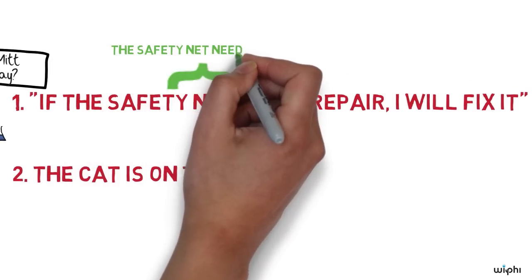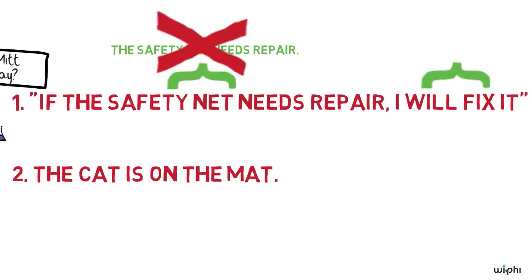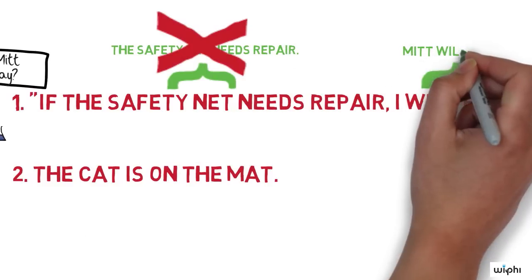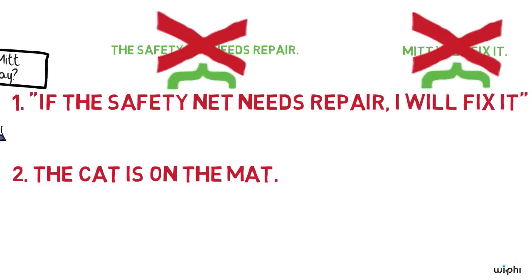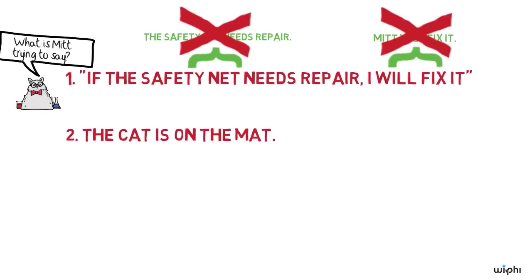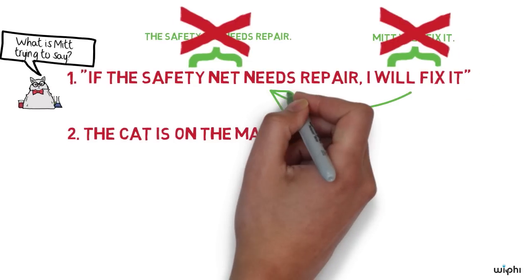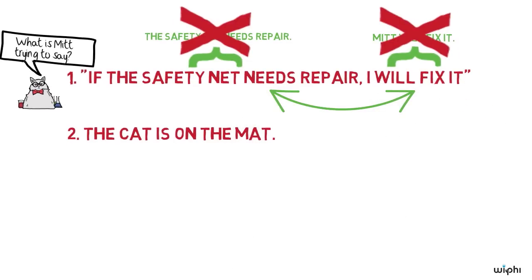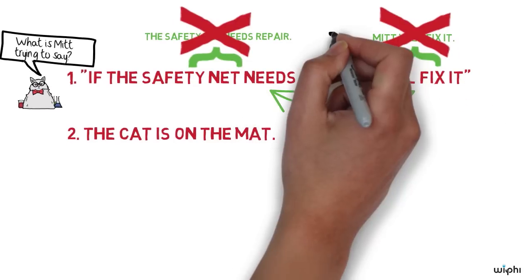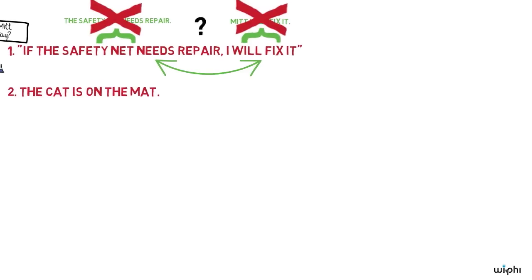He hasn't told us that the safety net needs repair, and he also hasn't told us that he will fix the safety net. Rather, what he said is that there is some connection between the safety net needing repair and his fixing it. But what connection?